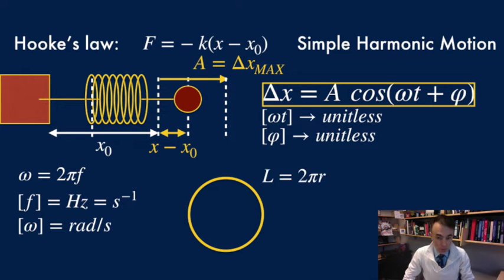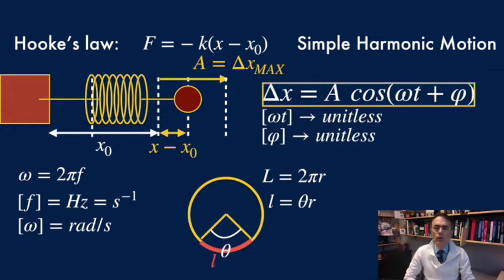We know that for a circumference is 2 pi r, where r is the radius of the circle. If we want a smaller angle, we know that theta times the radius is the section of the curve. Now we can divide and find the angle in radians, but this is the ratio of two lengths.